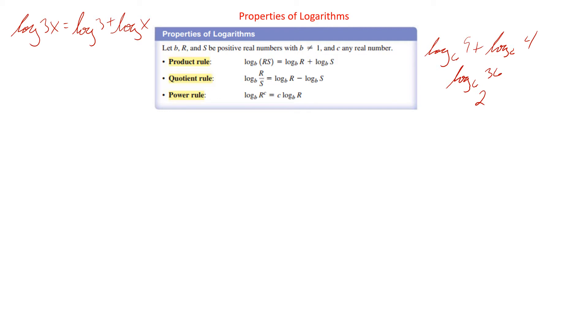And then the power rule. This one is one that is huge. This one's so important. If we have, let's say, log base 2 of 8 to the fifth power, we can take that 5 and move it out in front of the log to get 5 times log base 2 of 8. Log base 2 of 8 is 3. So it's just 5 times 3, which is 15.